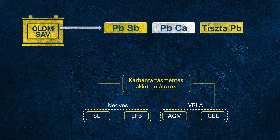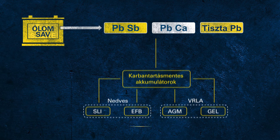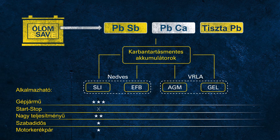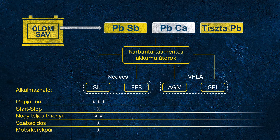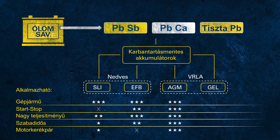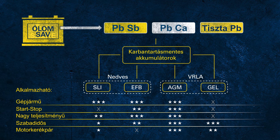As battery technologies are different, not every technology can properly support all applications. The SLI battery is great for conventional vehicles but cannot be used in modern vehicles with start-stop functionality. In the EU, more than 90% of all newly manufactured vehicles come with start-stop systems to meet CO2 regulations. EFB supports basic start-stop systems but reaches its limits in more aggressive start-stop systems or cars with many electrical consumers. AGM provides outstanding performance for all applications, including high-demand electrical systems in luxury cars, SUVs, or fully equipped long-haul trucks. Gel batteries are not very common in automotive applications but are often used in leisure or motorcycle applications.